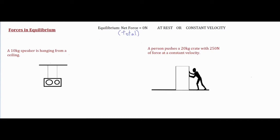The second case is that if the object is already in motion and then the forces become balanced at a certain point and your net force is zero, then it's going to be going at a constant velocity. In either of those cases your acceleration is zero meters per second squared.